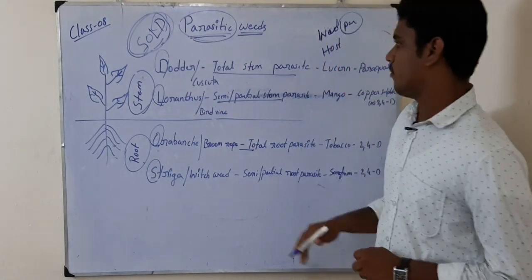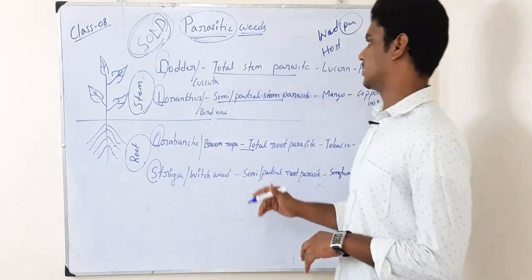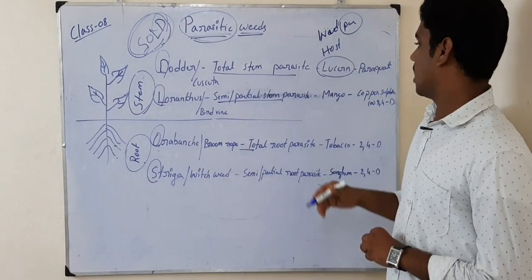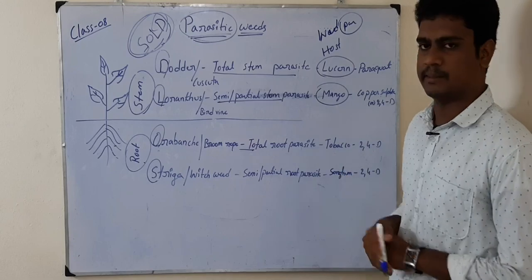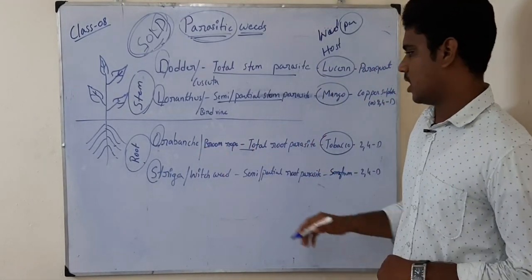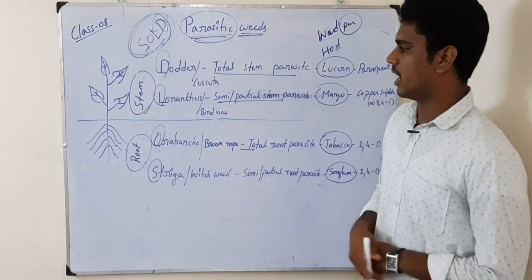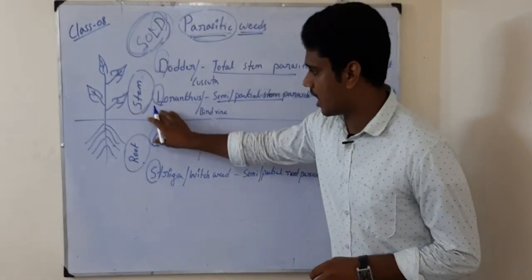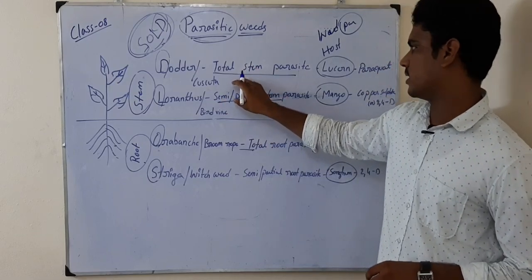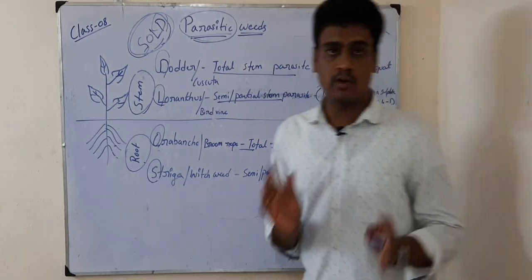Now let us see which host plants these parasitic weeds come on. Dodder especially comes on the crop called lucerne. Loranthus comes on trees, especially mango. Orobanche especially comes in the tobacco crop. Striga comes in sugarcane crop. So they may ask either whether Loranthus is a semi or complete stem parasite, or which crop it comes on.